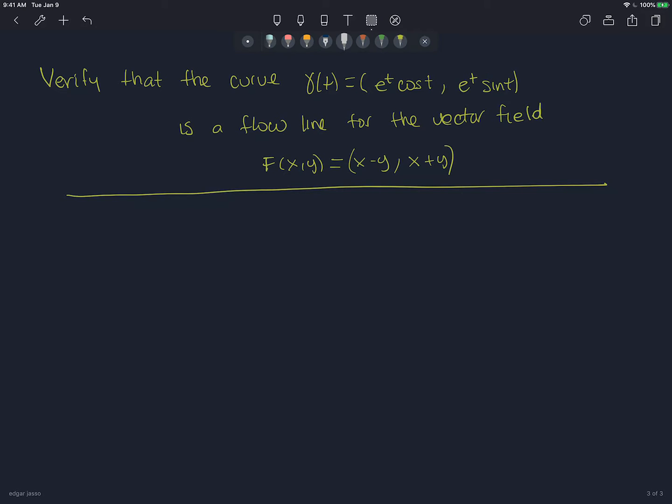Okay, so in this video we're going to verify that a curve is a flow line for a vector field. So we're just going to verify. We're not going to show how you come up with the solution of the curve. We're just saying if you're given this curve gamma, how do we verify that it is in fact a flow line for this vector field given down here?